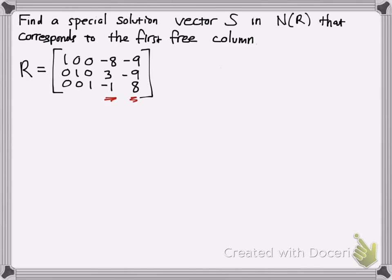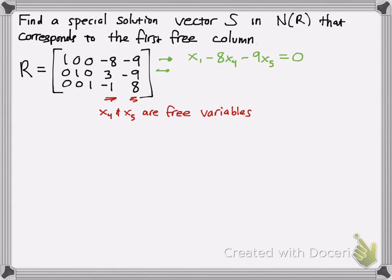Now we're going to find the special solution specifically for the first free column. Let's write out the equations. Remember, each column corresponds to a variable. So we have 1·x1 + 0·x2 + 0·x3 − 8·x4 − 9·x5. In order to find the special solution, you must set that equal to 0 to solve. We have x2 + 3·x4 − 9·x5 = 0, and then x3 − x4 + 8·x5 = 0.